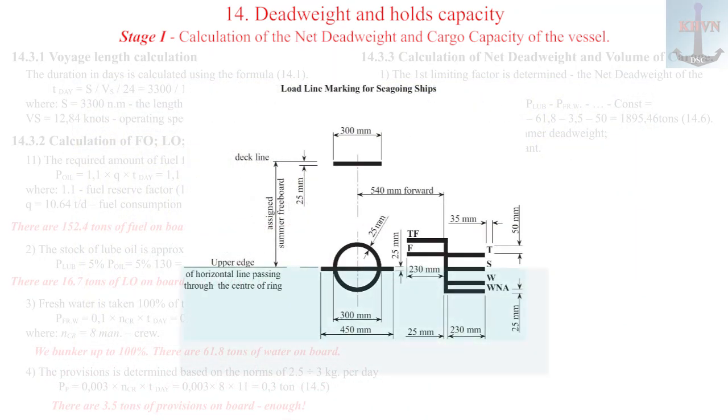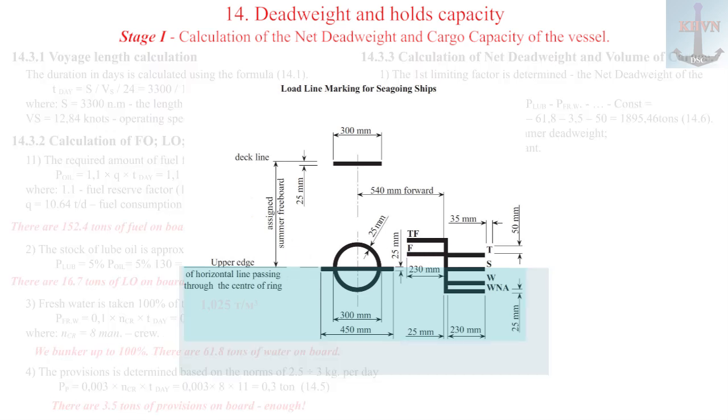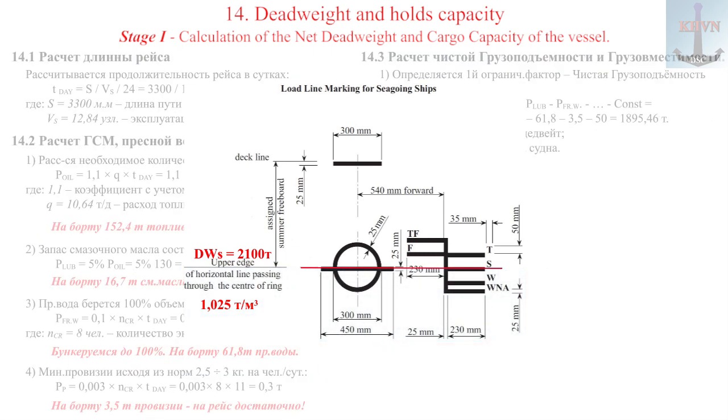Load line note. Both the displacement and deadweight of the vessel given in the ship's particular and other documents are given in summer, summer, letter S. This means that the vessel is in the summer zone, the dates of which are presented on the map of zones and seasonal areas, when fully loaded, will sink along the upper edge of the S grade, subject to a standard sea water density of 1.025 tons per cubic meter.